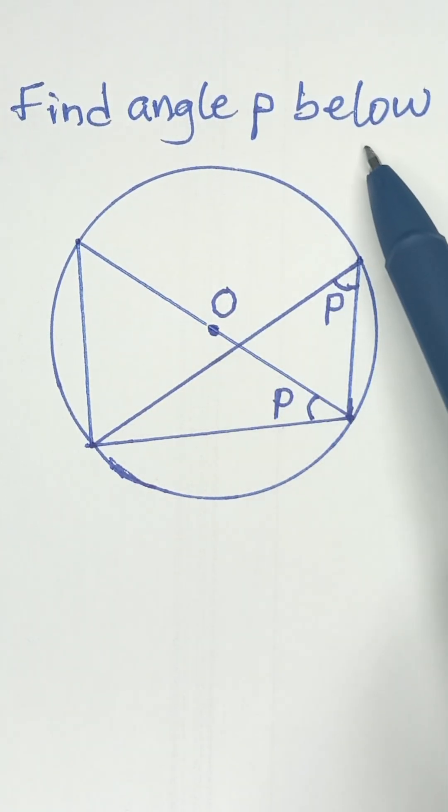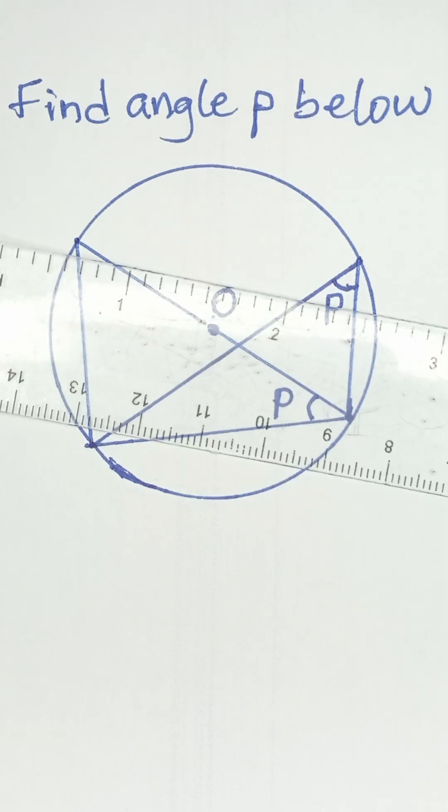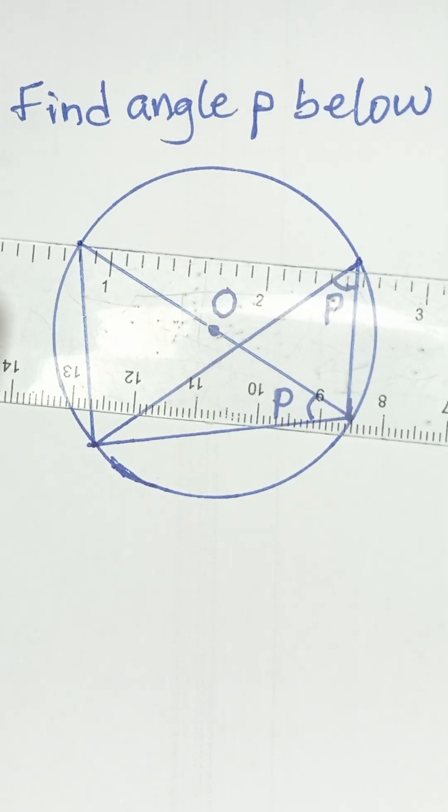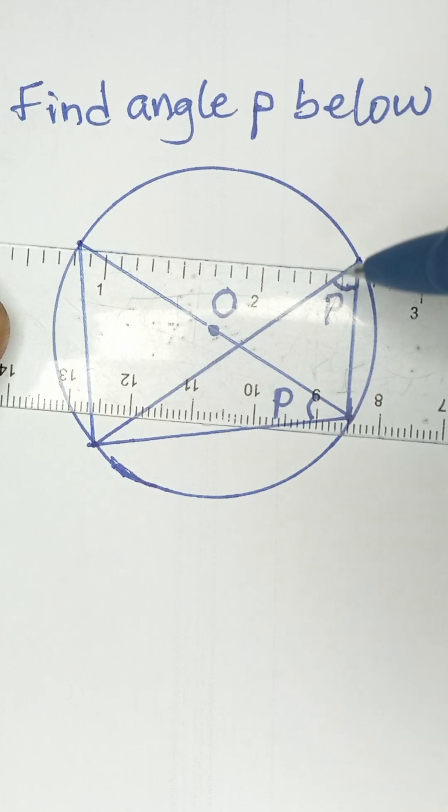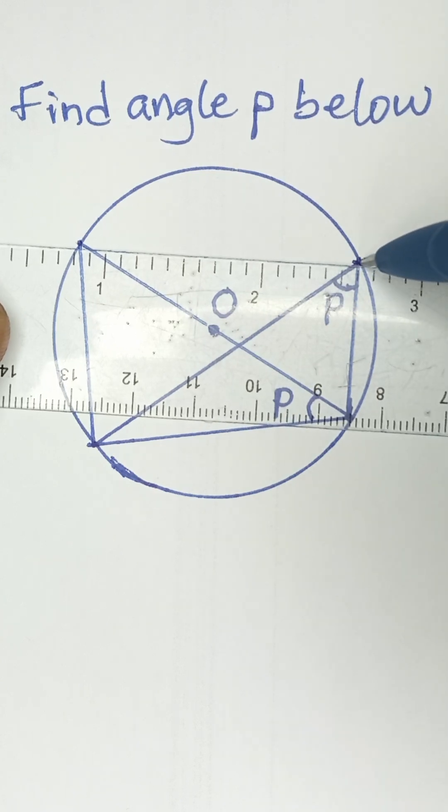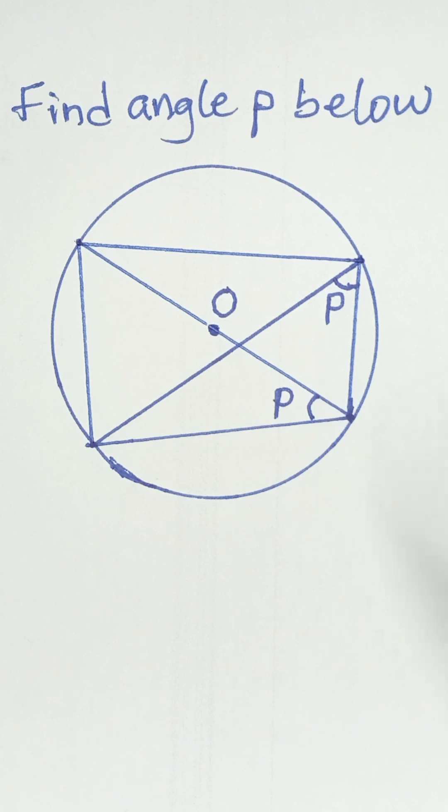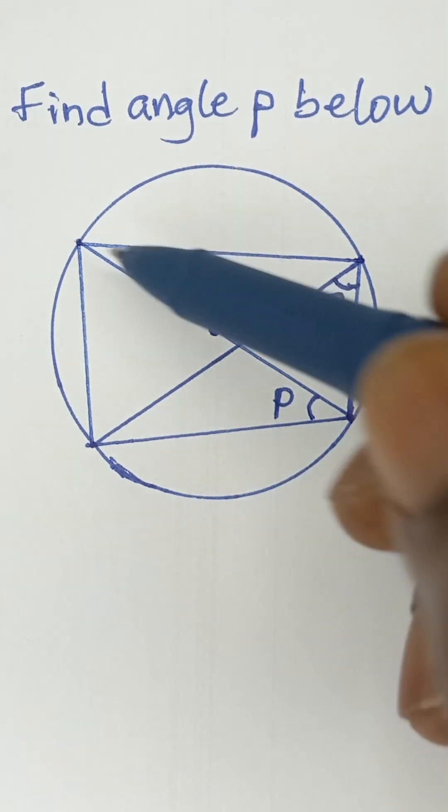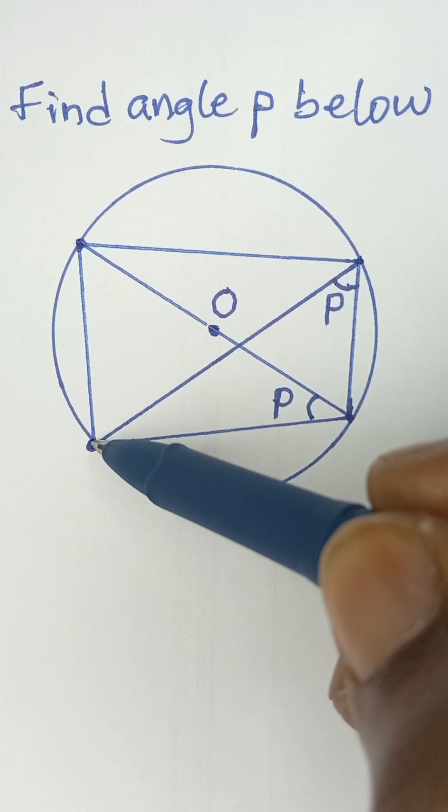Find angle P below. Now, something that we can really do here in order to get the value of P, we can just go ahead and trace a straight line on this side of the shape. And then once we have done that, you agree with me that this is a point here and this is also a point here.